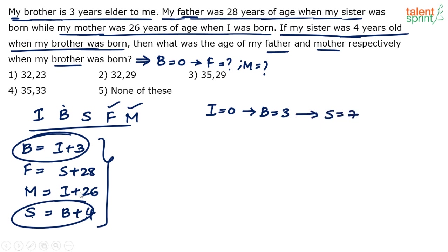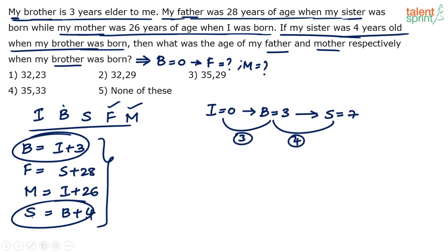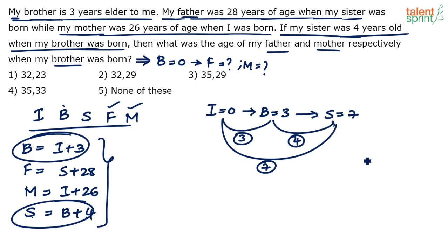Using these two equations: if i is 0, b will be 3, and s will be 3 + 4 = 7. So the age difference between me and brother is three years, between brother and sister is four years, and between me and sister is seven years.